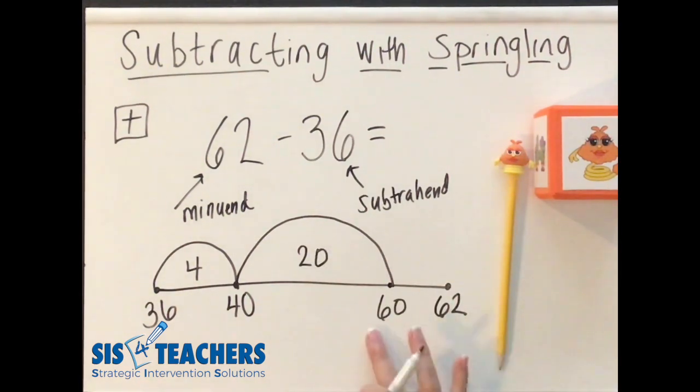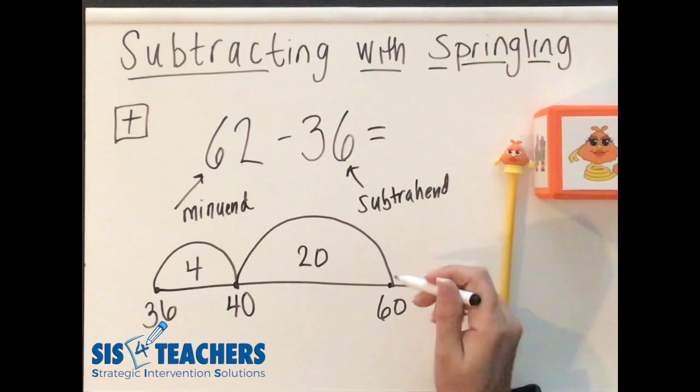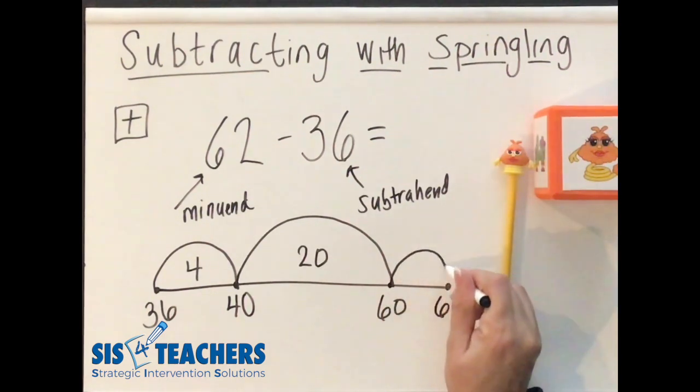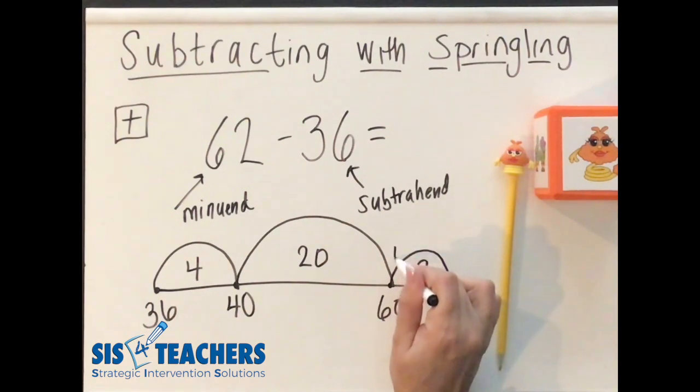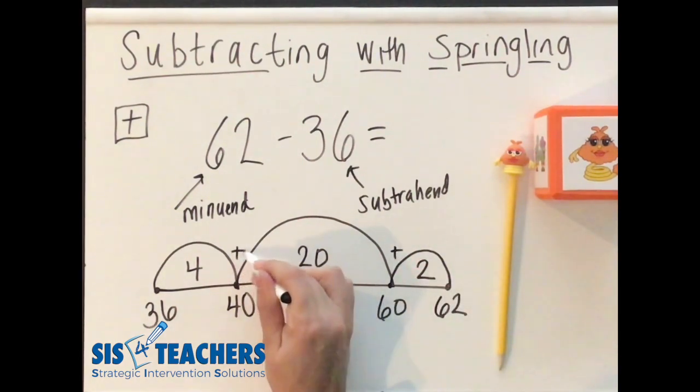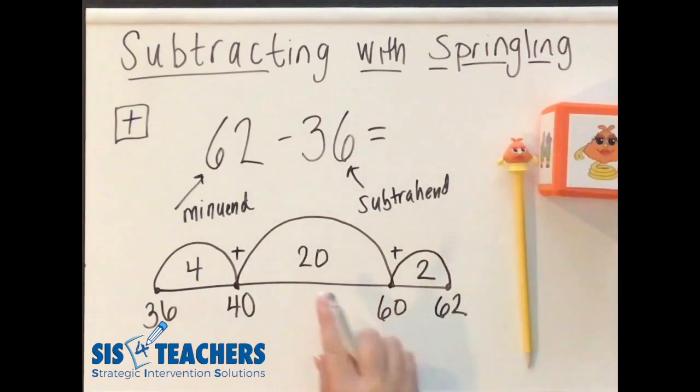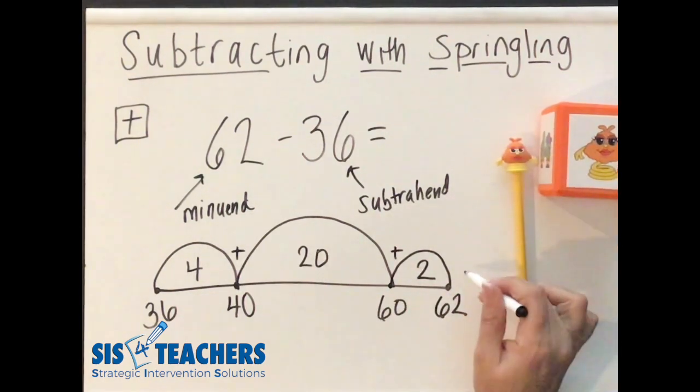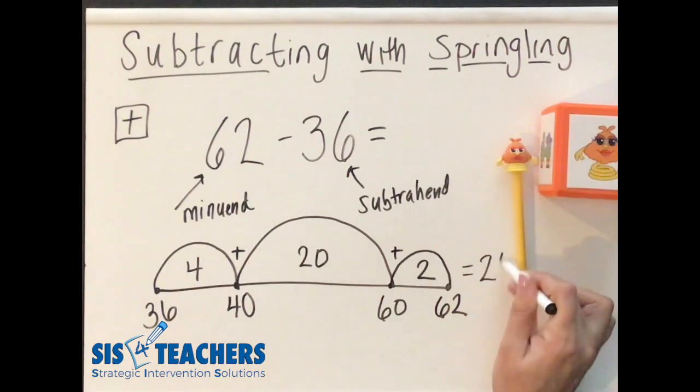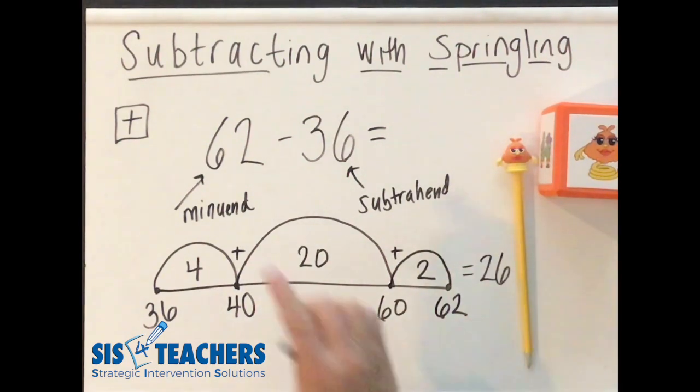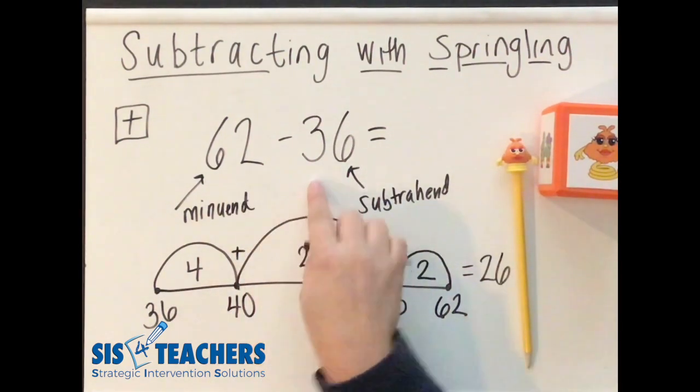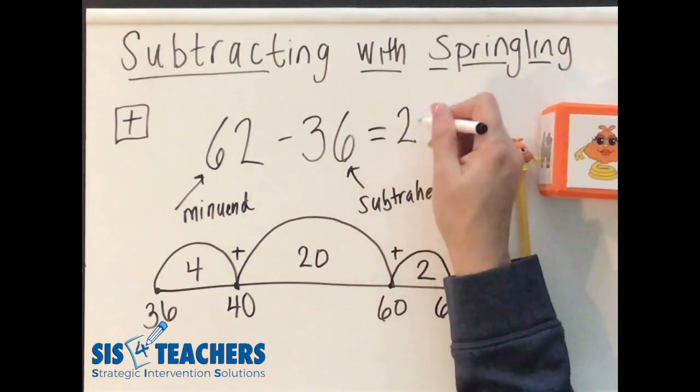She doesn't have very much more left to go. So we're going to hop from 60 to 62. And she knows that she's only hopped two. Because Springling really likes to keep track of her hops because of how large her coily tail is. She likes to count her hops. So she knows she's gone a total of 26 hops. So we know 62 minus 36 is 26.